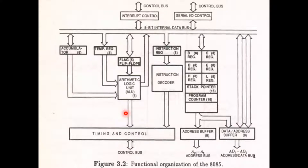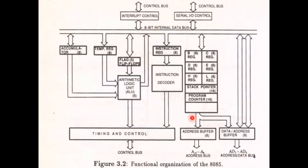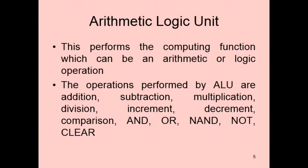If the architecture of the 8085 microprocessor is asked, this is the sketch that we are supposed to draw. It consists mainly of the arithmetic and logic unit, registers, stack pointers, program counters, and a timing and control unit. The thick arrow marks represent the different buses: data bus, control bus, utility bus, and address bus.